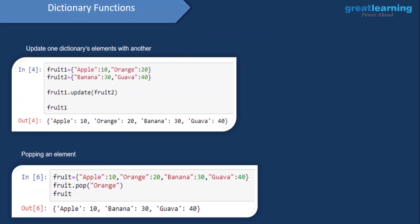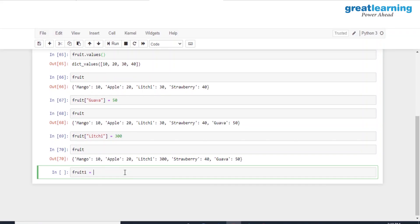Now we'll work with some dictionary functions. If we have two dictionaries — fruit_one with apple and orange, and fruit_two with banana and guava — and we want to append the elements of fruit_two to fruit_one, we use the update() method. So fruit_one.update(fruit_two) appends banana and guava to the end of fruit_one. Similarly, we can pop an element using the pop() method by passing in the key. For example, popping 'orange' removes it from the dictionary.